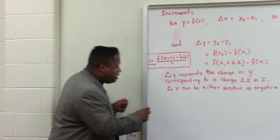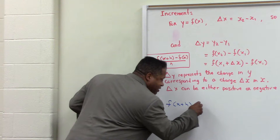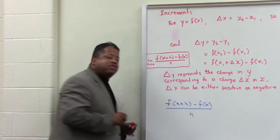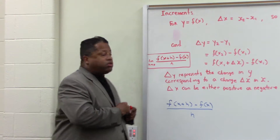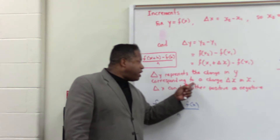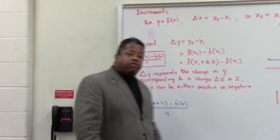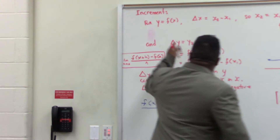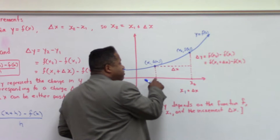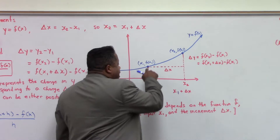When you have just f of x plus h minus f of x divided by h, that's considered the rate of change. So delta y will represent the change in y corresponding to the change of delta x in x, and delta x can be either positive or negative. Showing this applied to the graph, we have x₁ and then some output of f of x₁ — that's a point.